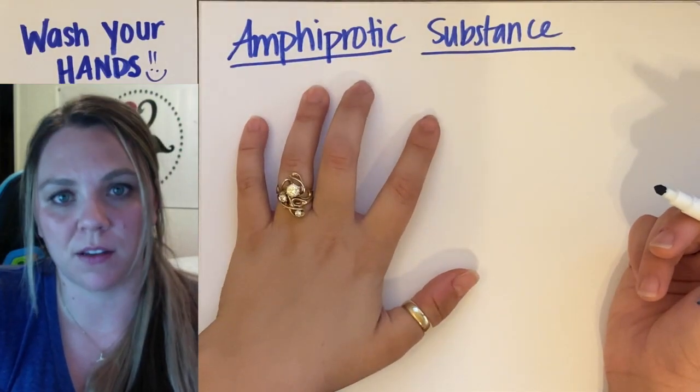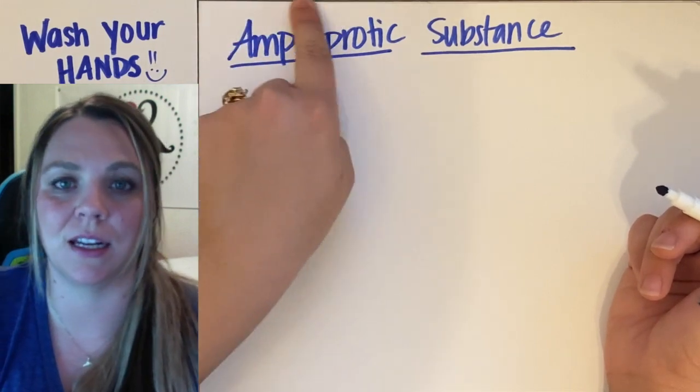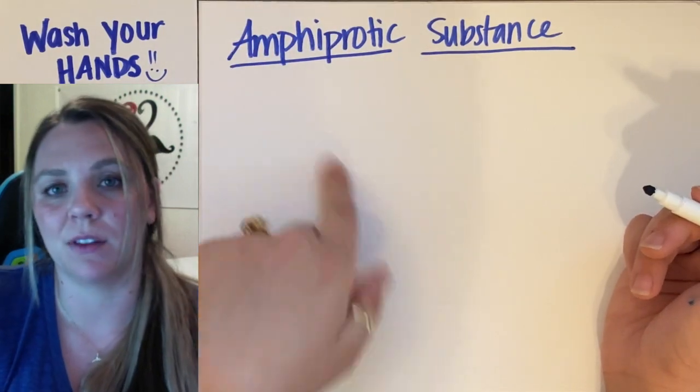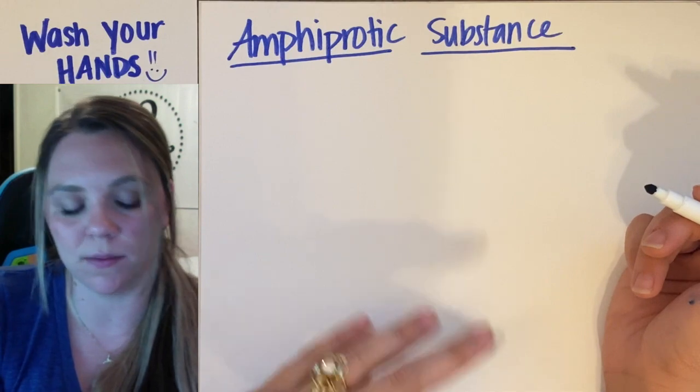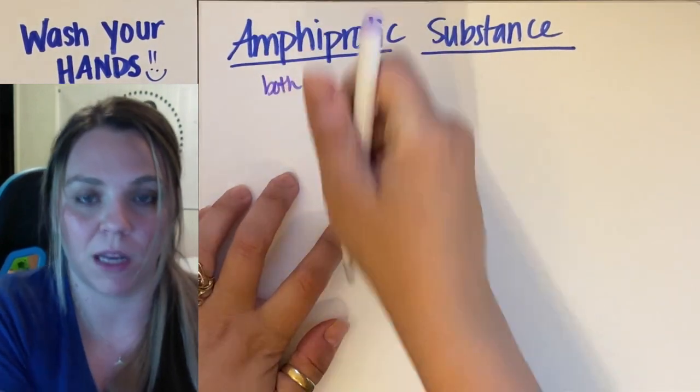All right, amphiprotic. We know the prefix of amphi, like an amphibian. It can live in both the land or the water. So amphi does, in fact, mean both.